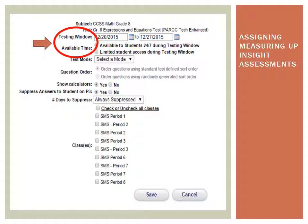Next, set the available time. Choose for the assessment to be available to students 24/7 during the testing window, or limit student access during the testing window to school hours. If you limit access, select a start time and an end time, and whether the test will be available every day or weekdays only.